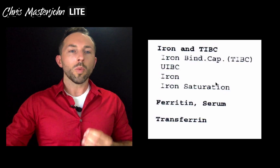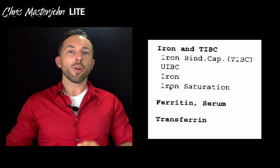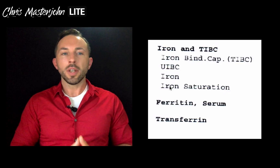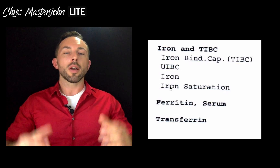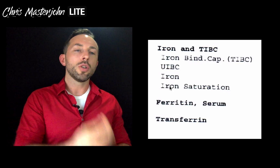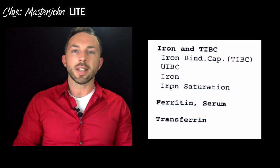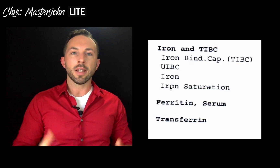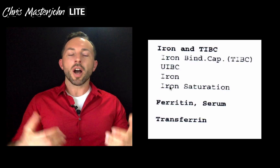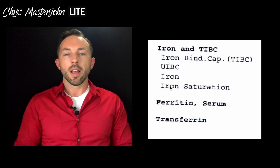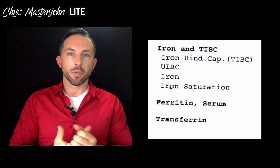In the iron binding panel, what we're looking at are measures of iron saturation, which is a cheaper estimate of transferrin saturation. What they do is say it's mostly transferrin in the blood that's binding iron, so let's just throw iron at the blood and see how much sticks. By doing that, you can estimate the total iron binding capacity of the blood. The unbound iron binding capacity is how much sticks when you don't remove the natural iron present in the blood. You can use all this to estimate the iron saturation as a cheaper estimate of transferrin saturation.